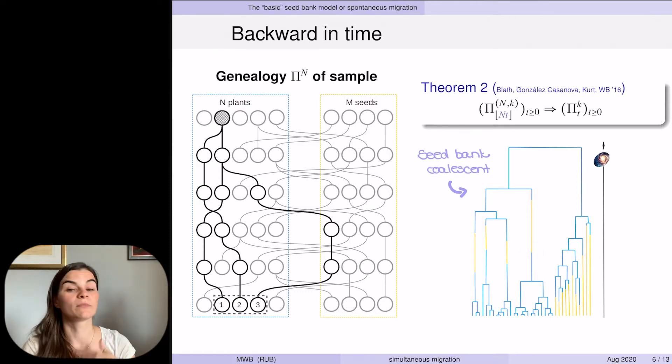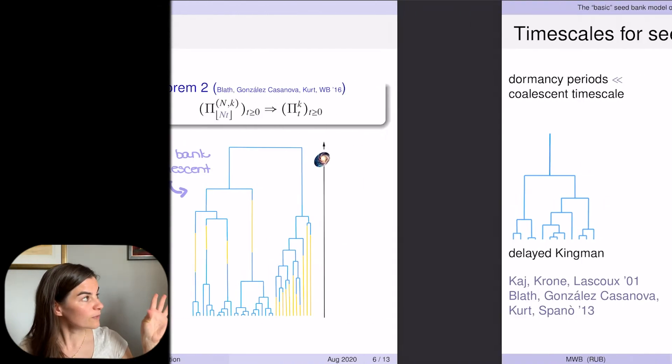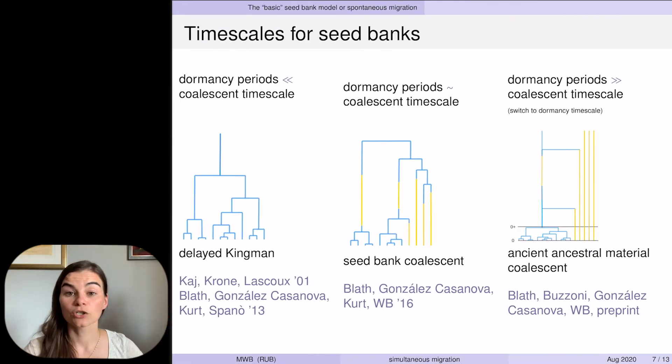The seed bank coalescent is the moment dual to the seed bank diffusion you saw before. Before we extend this model to include simultaneous behavior, let me quickly say a word about time scales because the effect of a seed bank depends on the relation between the length of the dormancy period and the coalescent time scale.